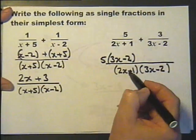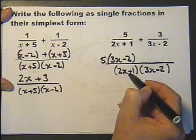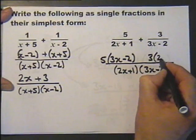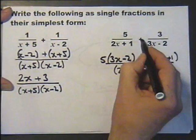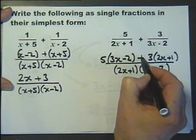Looking at this fraction with this, the bottom has been multiplied by 2x plus 1, so I need to multiply the top by 2x plus 1. Making sure you get that sign there, especially if that's a minus, be careful.